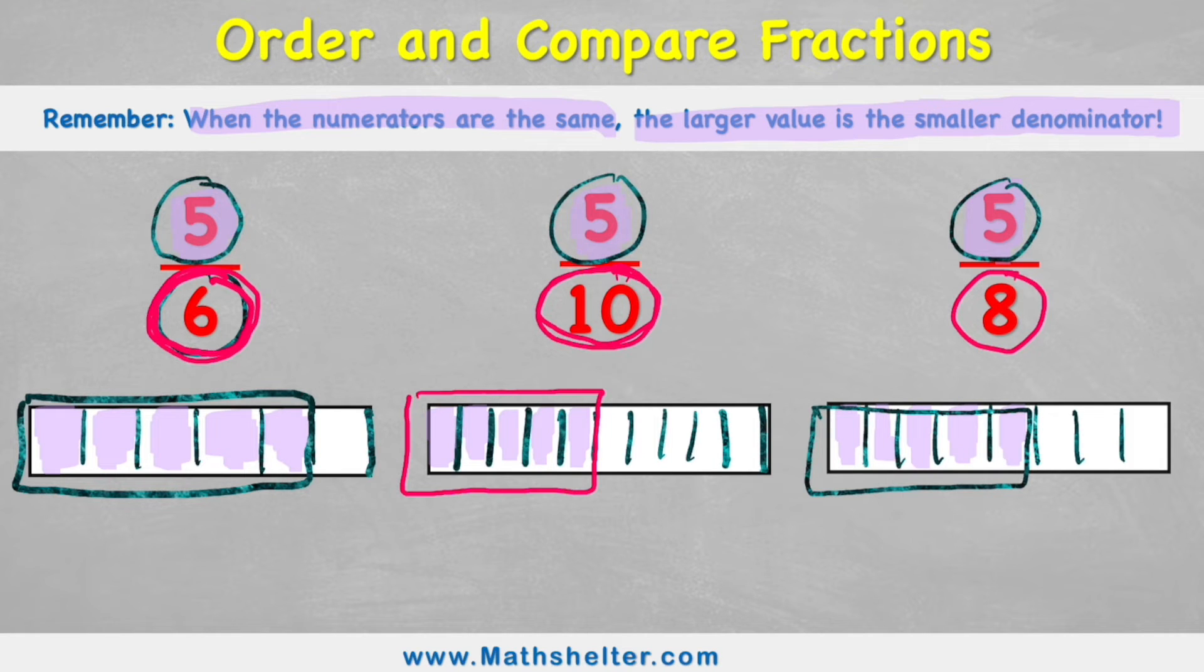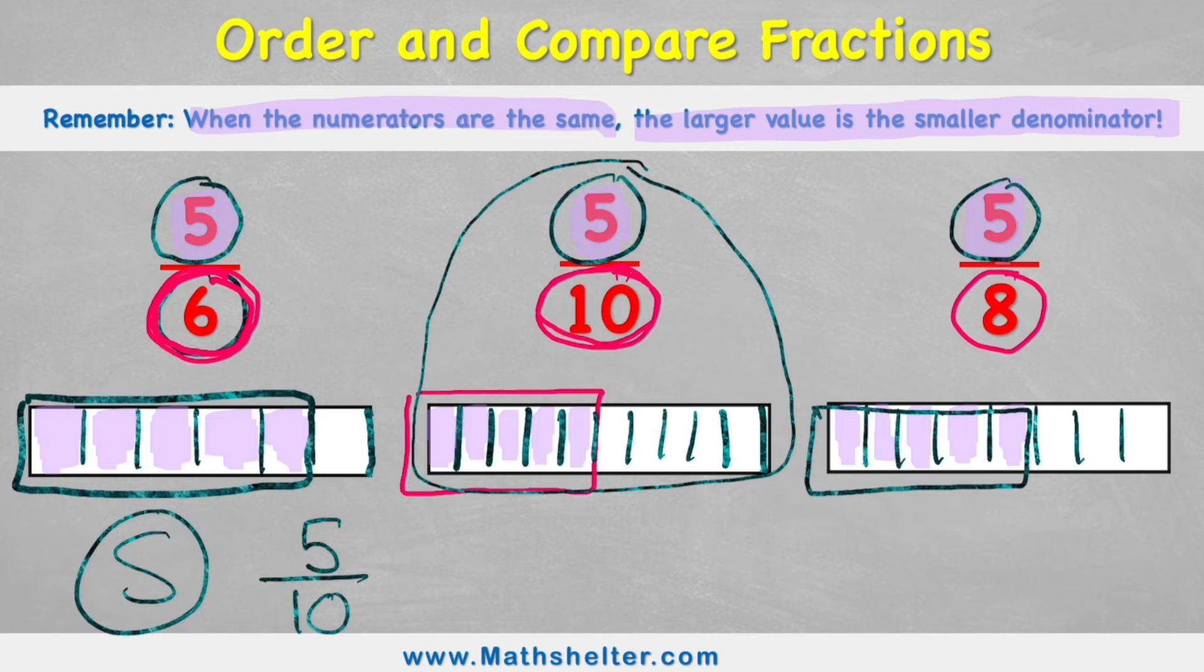I can see the smallest one that I have here is my five tenths, because I only get half of this chocolate bar. So my smallest is five tenths. Let's put smallest on this side. Then the next one I can see is my five eighths, because I just get a little bit more than the half. But the biggest one that I get is five sixths. I nearly get the whole chocolate bar on this one.